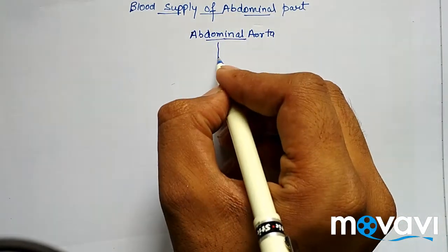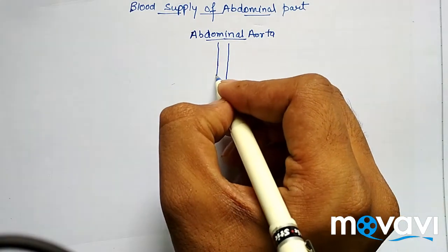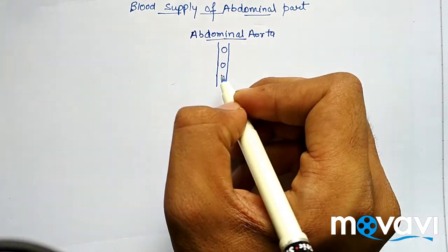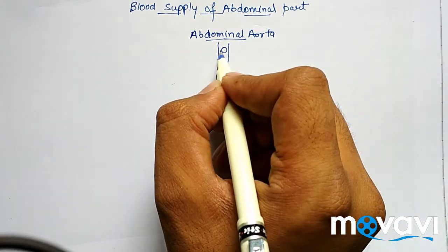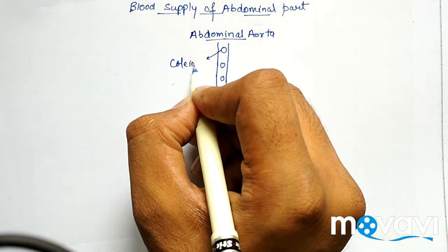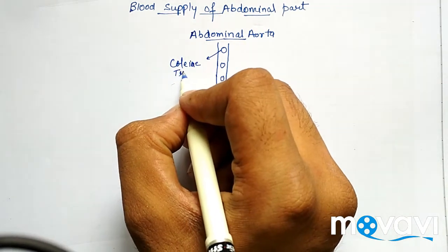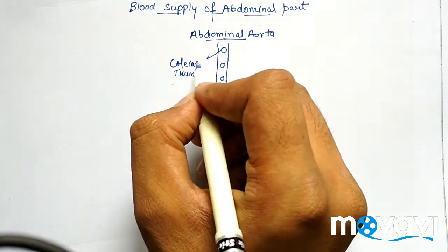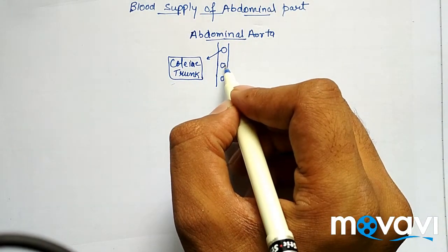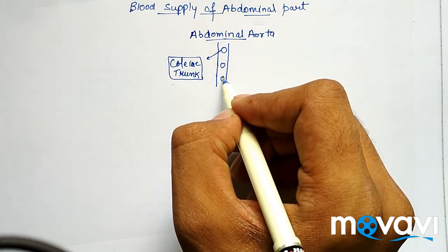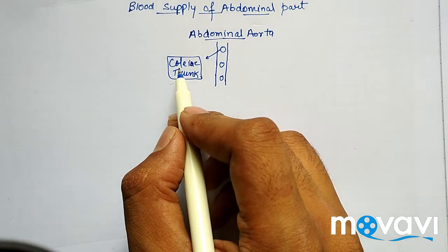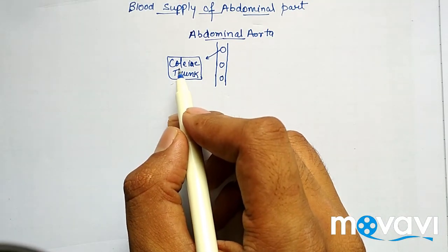Suppose this to be the abdominal aorta, and the three separate branches arising from it: first, second, and third. The first branch we call the celiac trunk. The second branch we call the superior mesenteric artery, and the third branch is the inferior mesenteric artery.